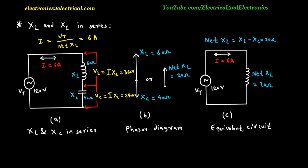Inductive reactance XL and capacitive reactance XC in series. An inductive reactance XL of 60 ohms and capacitive reactance XC of 40 ohms are connected in series, with 120 volts AC voltage applied.